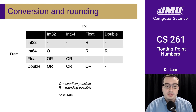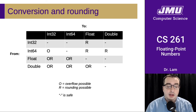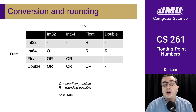Here's a table that summarizes this. Converting from the column on the left to the row on the right: a dash indicates that the conversion is safe, an O indicates that it could overflow, and an R indicates that rounding is possible.